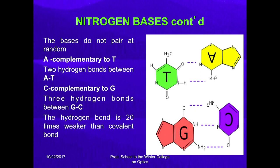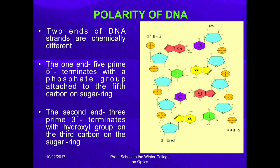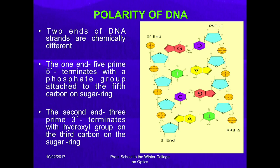The hydrogen bond is 20 times weaker than the covalent bond. The two ends of the DNA strands are chemically different: one end is the 5 prime end, which terminates with the phosphate group attached to the 5th carbon, and the 3 prime end terminates with a hydroxyl group on the 3rd carbon on the sugar ring.